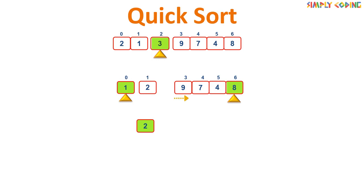Then it moves to the right-hand side and picks 8 as the pivot. We start from the beginning of the array and find the first number greater than the pivot. We stop at 9, and from the right-hand side we stop at 4. We swap these two numbers. Then we continue moving from the beginning and stop at 9 which is greater than 8, but now we have crossed j, so we stop and swap 9 with the pivot position. With this, 8 is also sorted.